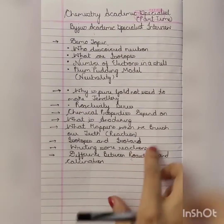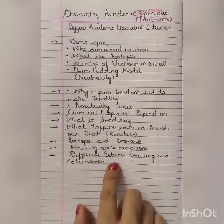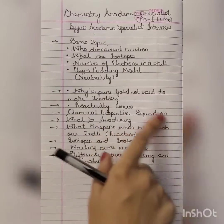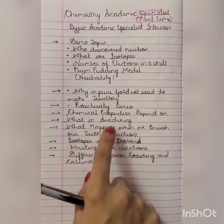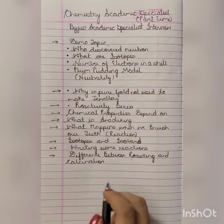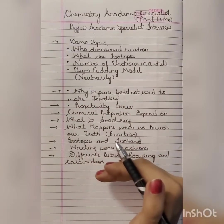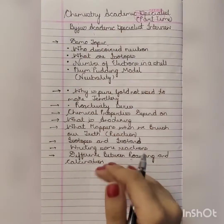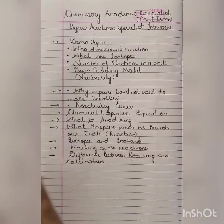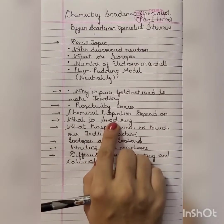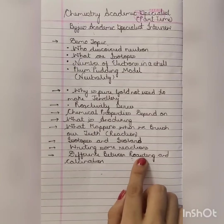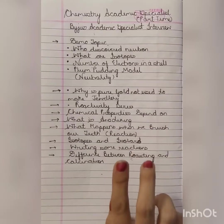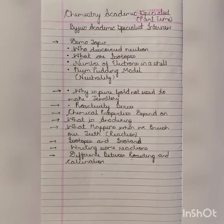Everything was from NCERT only. I received a mail in which the topics were notified, and from those I prepared my demo. All the questions were from those chapters — every question was from NCERT. Anodizing, all of it — you can find everything in NCERT itself. All questions were from the demo topics only. Thank you.